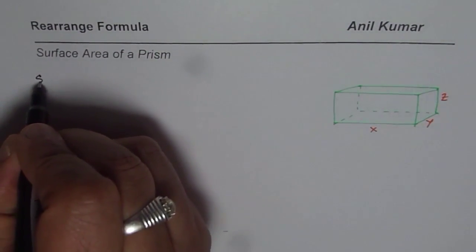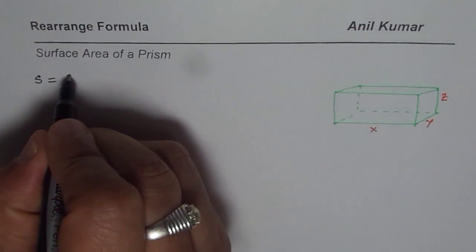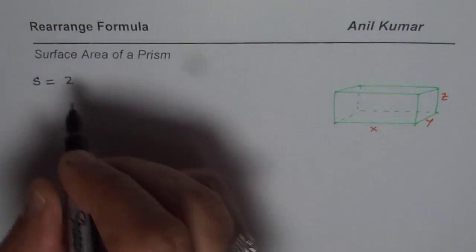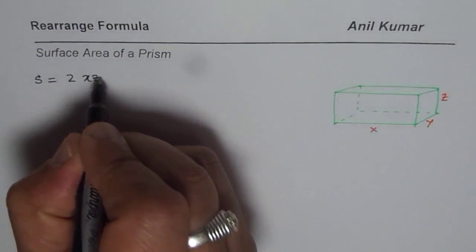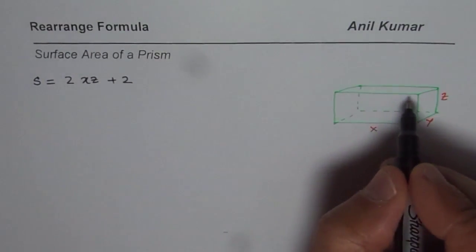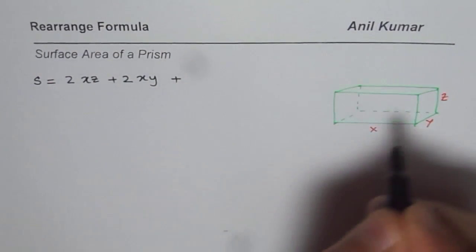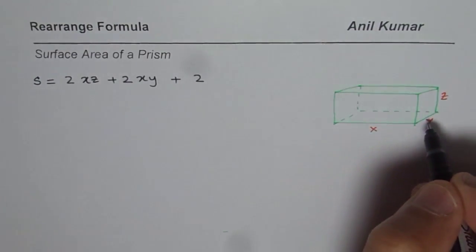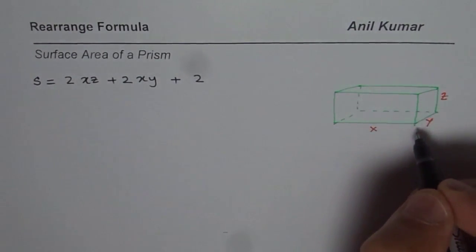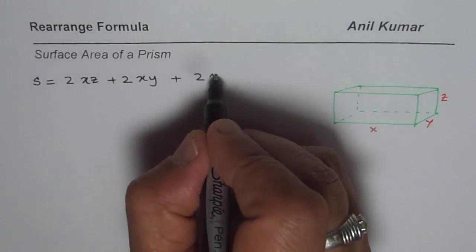We can write the surface area S for this kind of prism as: twice the area of the front side, which is X times Z, plus two times the top and bottom, which is X times Y — so two times X times Y — plus two times the two sides, which is Y times Z. So S = 2XZ + 2XY + 2YZ. These are all rectangles, so we multiply the sides to find each area.